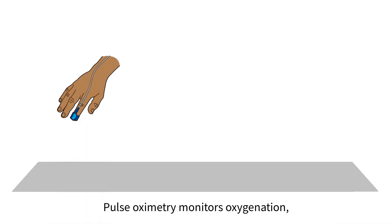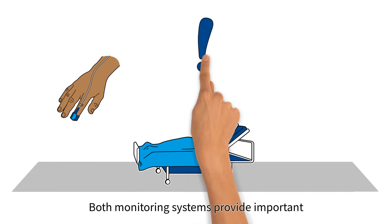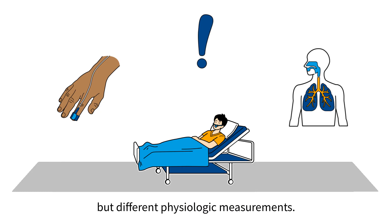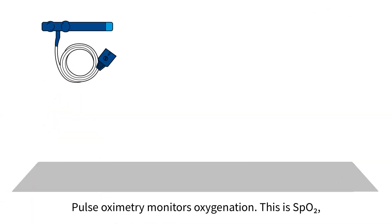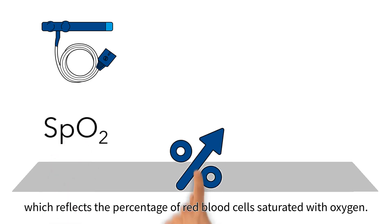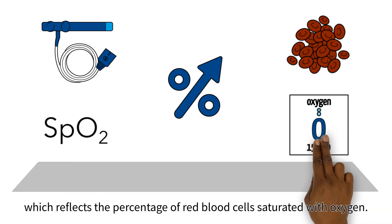Pulse oximetry monitors oxygenation while capnography monitors ventilation. Both monitoring systems provide important but different physiologic measurements. Pulse oximetry monitors oxygenation — this is SpO2, which reflects the percentage of red blood cells saturated with oxygen.